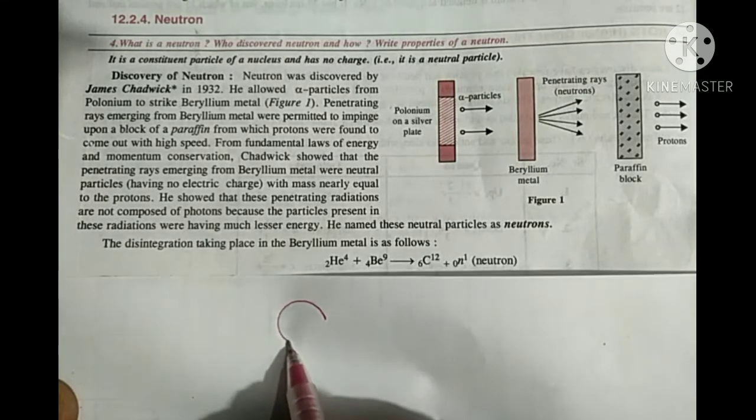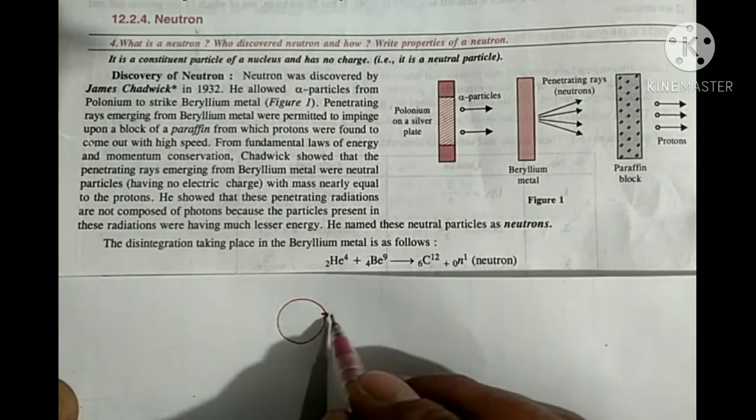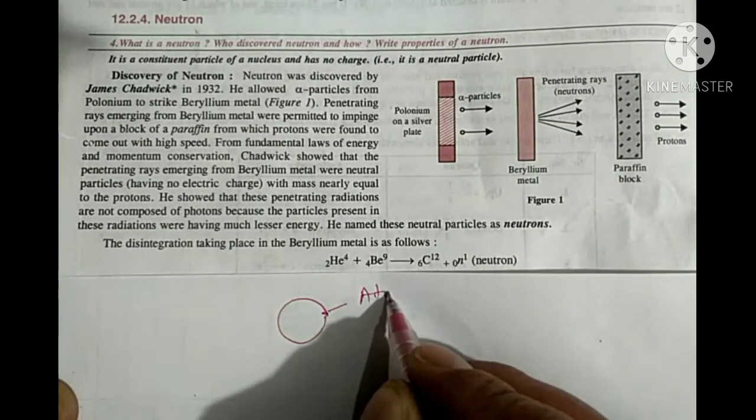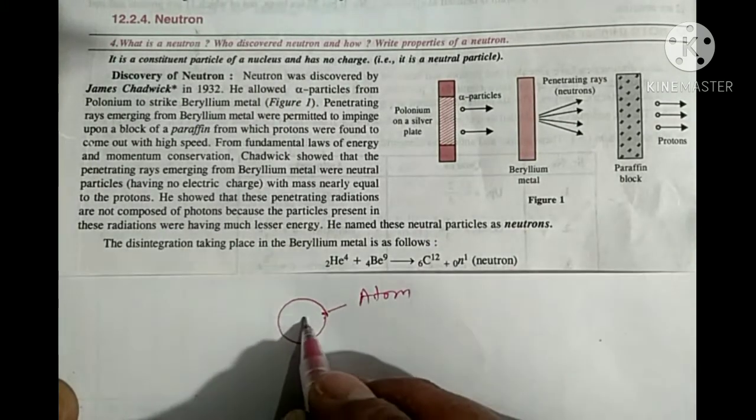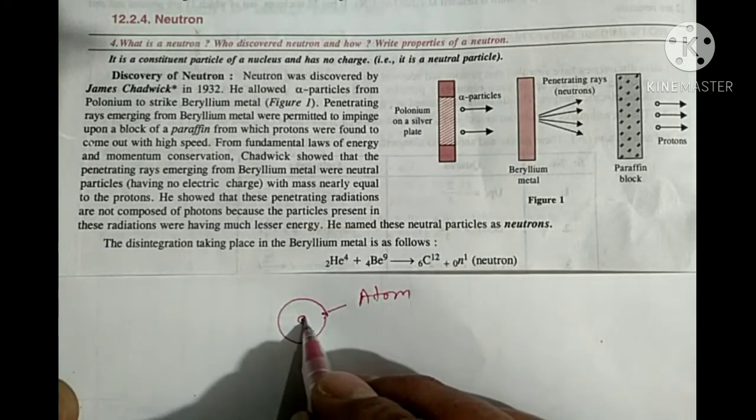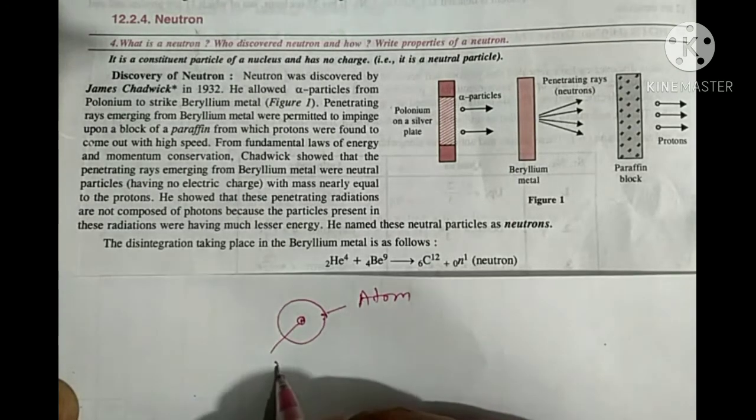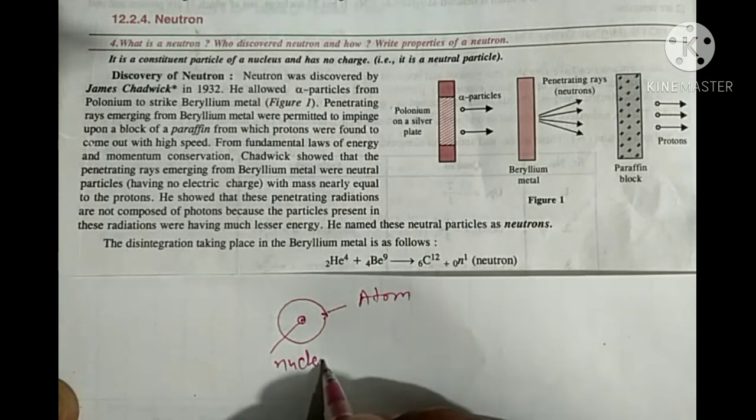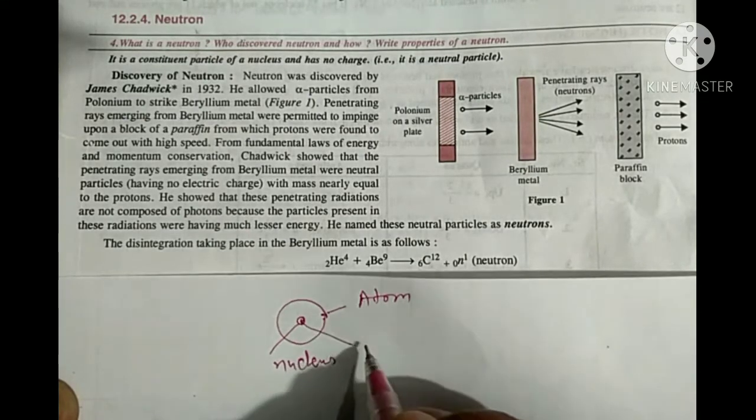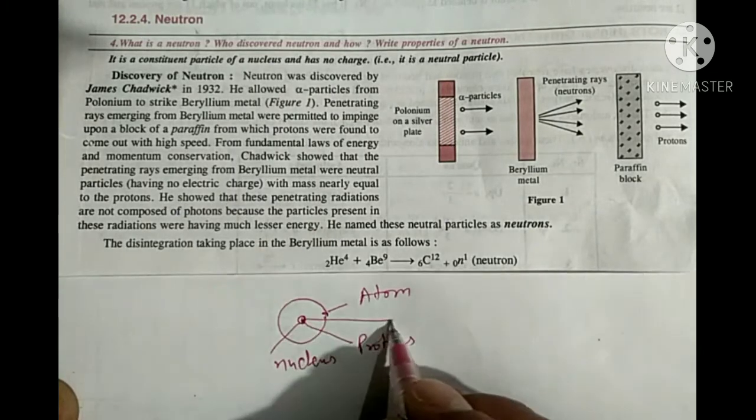An atom consists of proton, neutron, and electron. Suppose this is an atom, and a point inside the atom where the whole positive charge lies is known as the nucleus. And in the nucleus there are protons and neutrons.